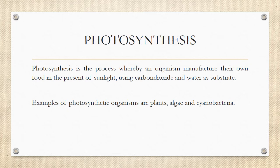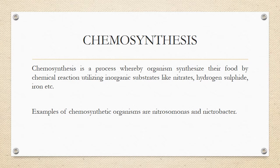Don't forget — plants are not the only photosynthetic organisms; we also have algae and cyanobacteria. Now let's move to chemosynthesis. Chemosynthesis is a process whereby organisms manufacture their food by chemical reaction, utilizing inorganic substrates like nitrates, hydrogen sulfide ions, etc. So while photosynthesis uses light, chemosynthesis uses chemical reactions.